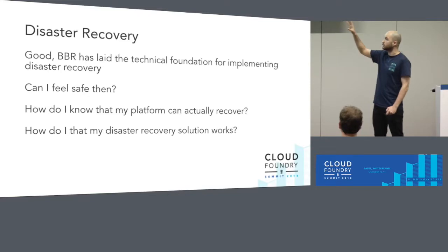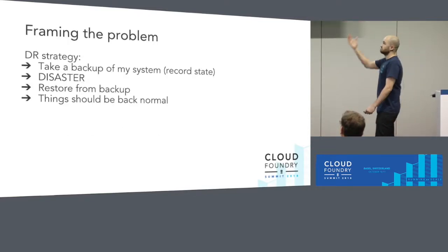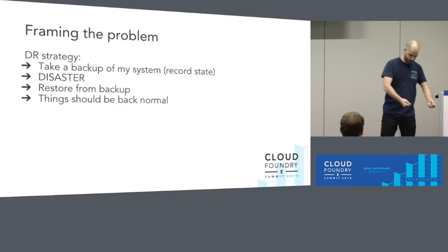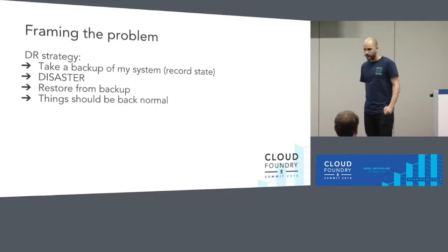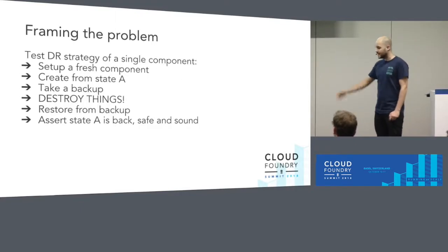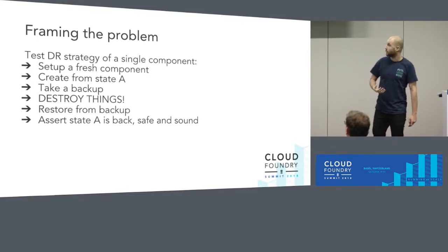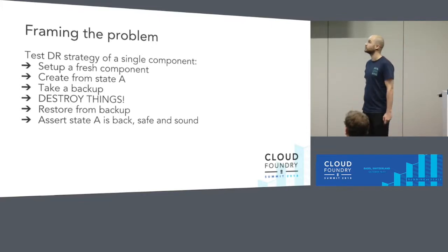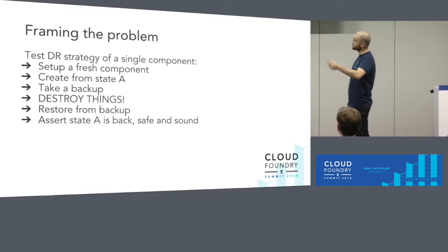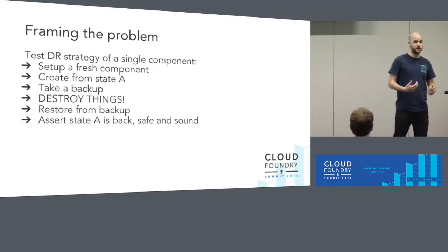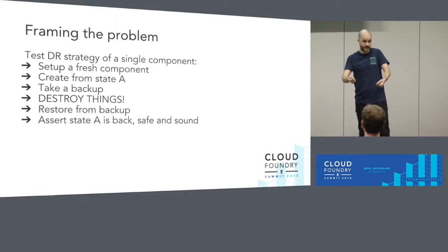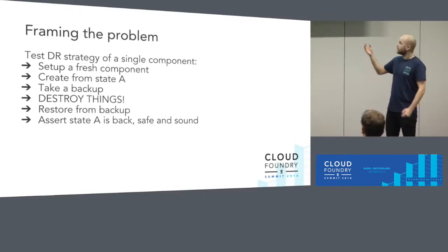Before answering these questions, let's look at a very minimal disaster recovery strategy. You take a backup, everything's fine, then suddenly disaster happens. You fetch your instructions, you have your backup, you restore it, and things should be back to normal. But how do we test that? We have a bunch of instructions, but we need to test-drive it like any other feature in our code. A test case would look like: set up a fresh component, create some state, take a backup, simulate a disaster by destroying some things, restore from the backup, and finally verify that the original state is back after the restore.